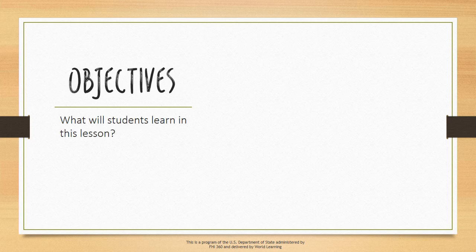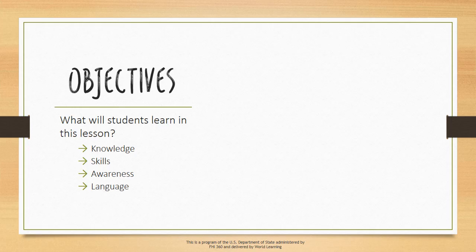The first important question you should ask when designing a lesson plan is: what will students learn in this lesson? Think about the specific knowledge, skills, awareness, and language you want students to learn. Make the objectives reasonable and attainable — that is, make sure the objectives can be reached within the time you have for the lesson.